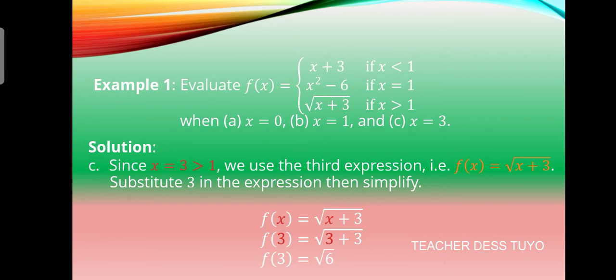For letter c, since x = 3 and 3 is greater than 1, we use the third expression f(x) = the square root of x + 3. We substitute 3 into the expression and simplify: f(3) = the square root of 3 + 3, so f(3) equals the square root of 6.